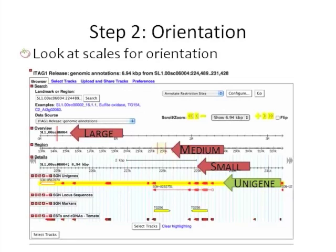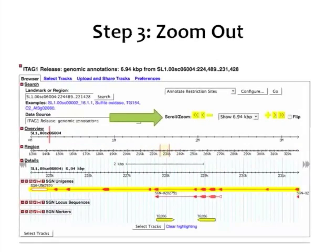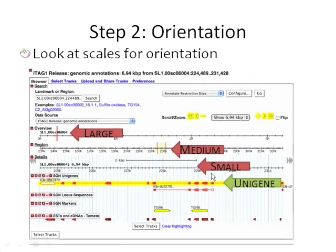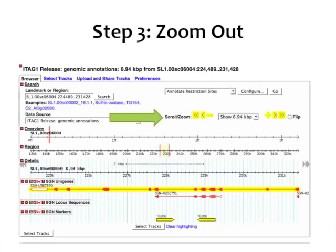We come up with this hopefully not-so-scary-looking genome browser screen. The first thing I like to do is orient myself with the scales. Up here you can see the large scale — our scaffold. We have a medium scale showing more detail in terms of physical distance. And then we can go down to our smaller scale. Just for reference, this is our unigene, highlighted in yellow. You can turn that off using the clear highlighting function at the bottom of the screen.